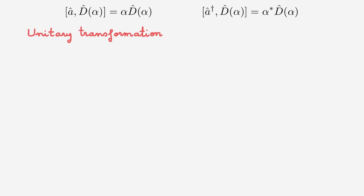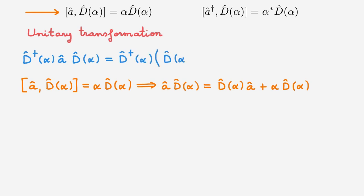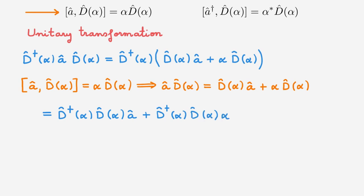We consider D†(α) A D(α), called the unitary transformation of A with respect to the displacement operator. To evaluate this, we start with the commutator of A with D(α), which implies that A D(α) equals D(α) A plus α D(α). Using this, we can rewrite the unitary transformation as D†(α) multiplying these two terms, getting a first term and a second term where I move the scalar to the end.